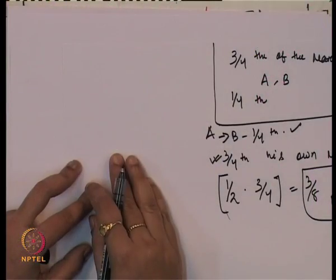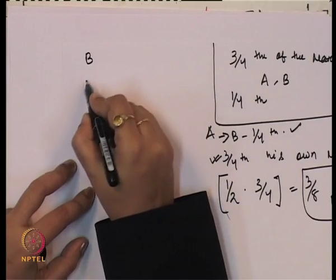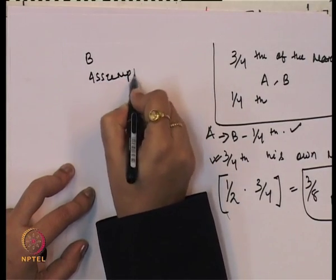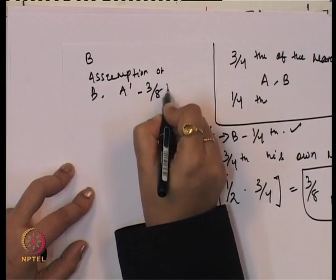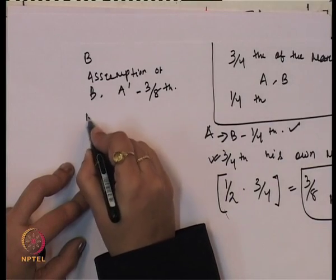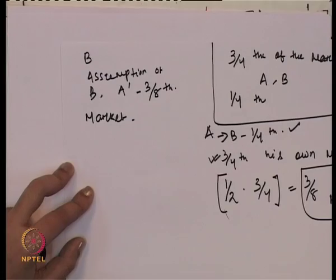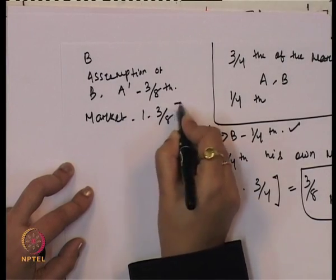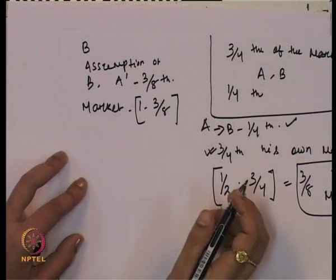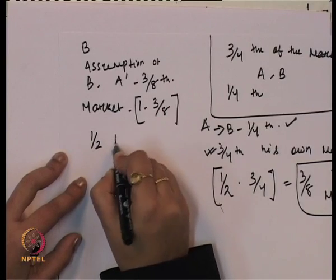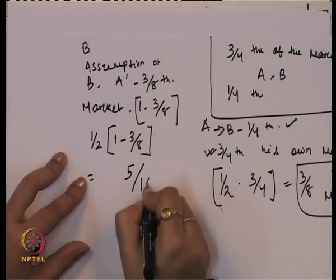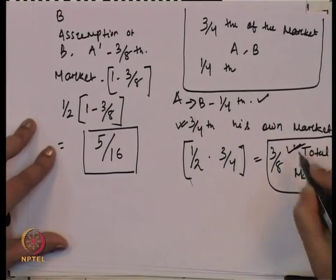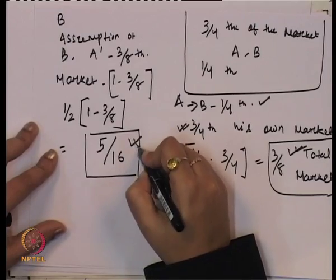Now we see how B reacts. B assumes A will continue to produce three-eighths, so the market available for B is 1 minus 3/8. B produces half of this remaining market, which is half of 5/8, coming to 5/16. So A produces 3/8 and B produces 5/16.